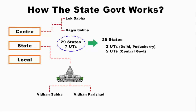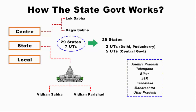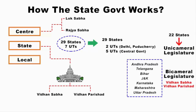As of 2017, only 7 states have bicameral legislature: Andhra Pradesh, Telangana, Bihar, Jammu and Kashmir, Karnataka, Maharashtra and Uttar Pradesh. Only these 7 states have two houses — Vidhan Sabha and Vidhan Parishad. That means only 7 out of 29 states in India have bicameral legislature, and the rest 22 states have unicameral legislature. Bicameral means two houses and unicameral means one house.